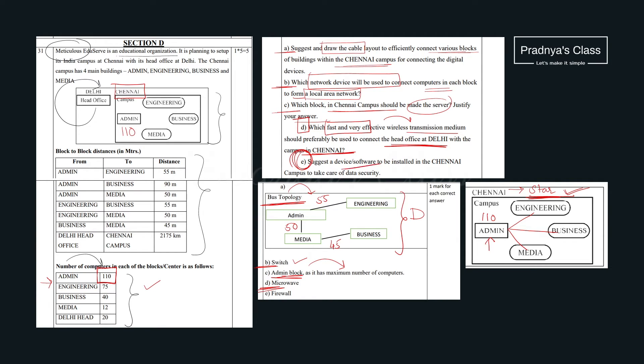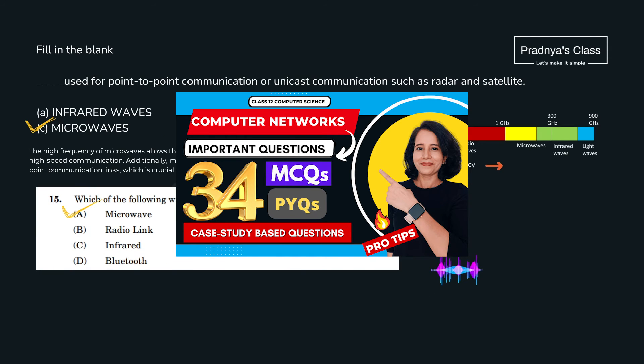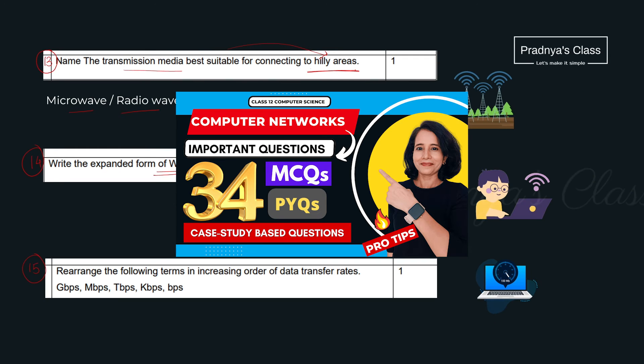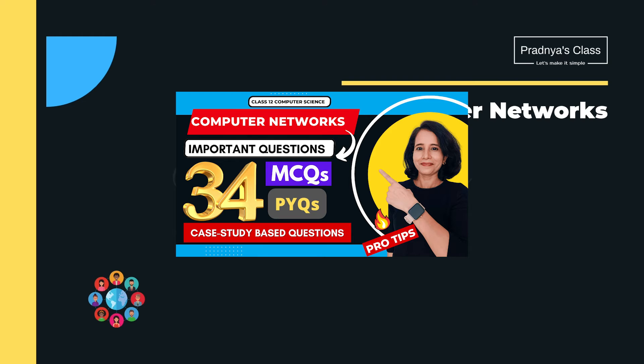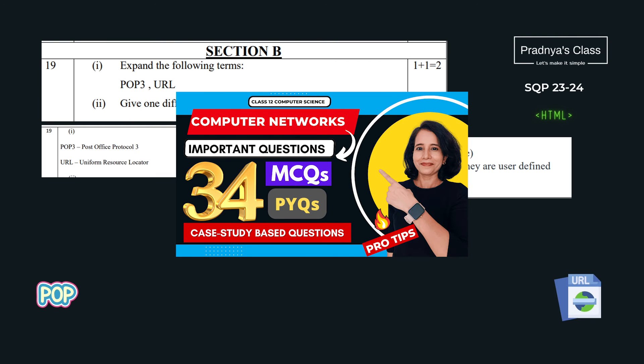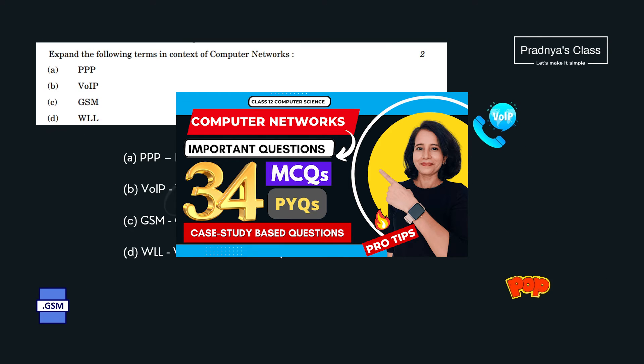Suggest a device or software to be installed in the Chennai campus to take care of data security. For computer, firewall is the best option. Here we have solved some more one mark questions. So please go through it to get an idea what type of questions you will be getting under one mark section. Along with one mark there are some two marks questions also. So it will be good for you to check out each and every question.